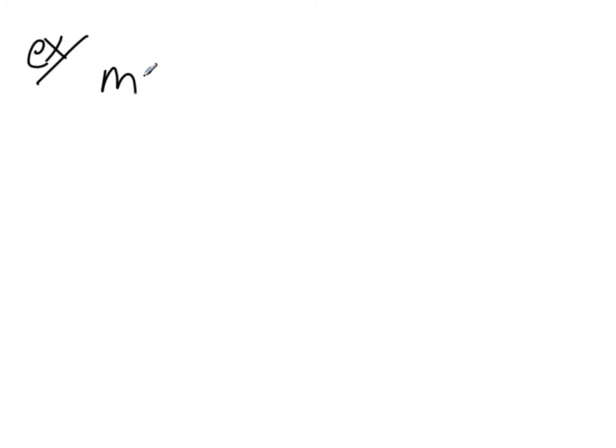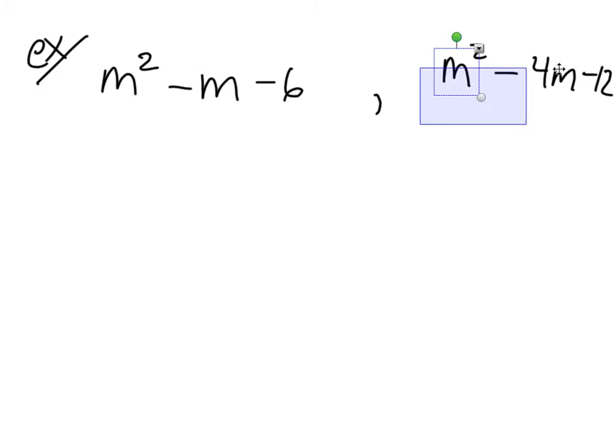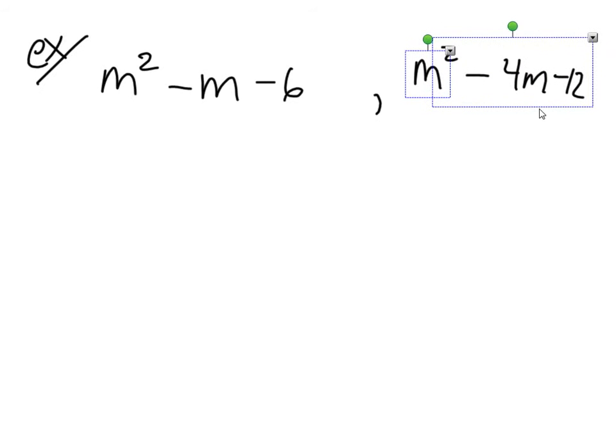Let's say we have m squared minus m minus 6, and we have m squared minus 4m minus 12. So we want to find the least common multiple between these two things. Our first step, even with the monomials, was to factor. So we're going to try to factor these. And I intentionally gave myself nice numbers because we already see that I struggle.